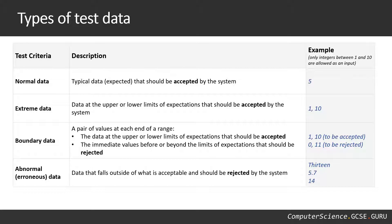For example, if accepting integers between one and ten, I'd go with number five as normal data — it's right in the middle and I'd expect it to pass through with no issues. For extreme data, those are values at the upper and lower limits of what's accepted, so I'd go with one and ten, just to check that those edge values are being accepted correctly.